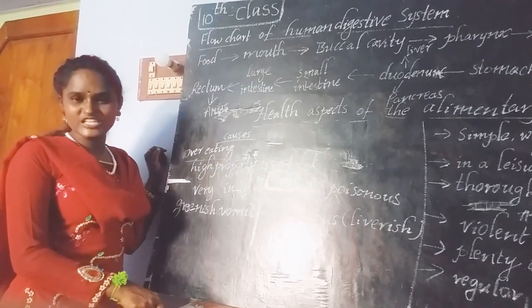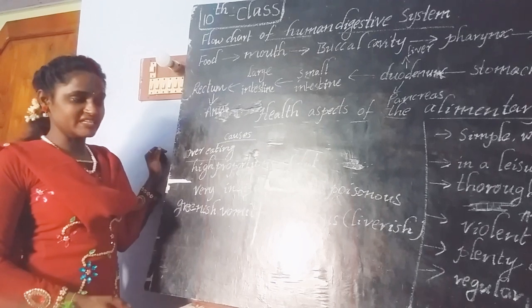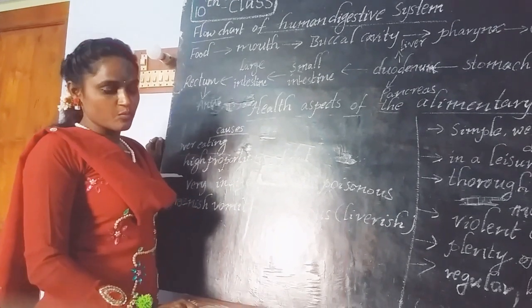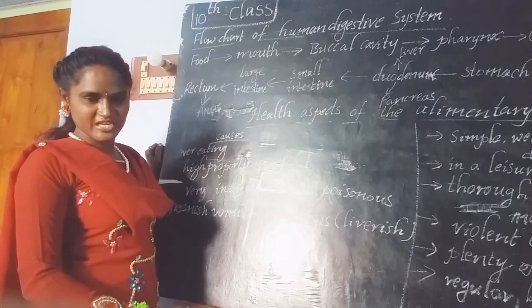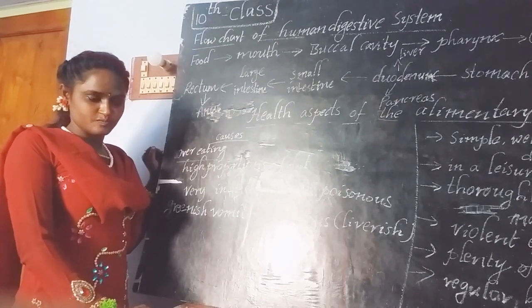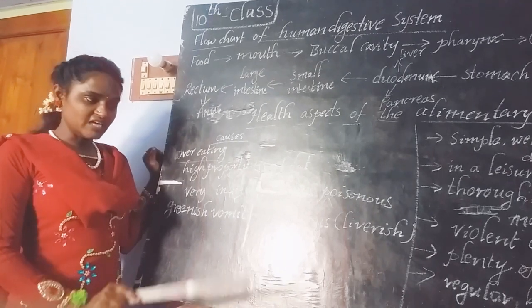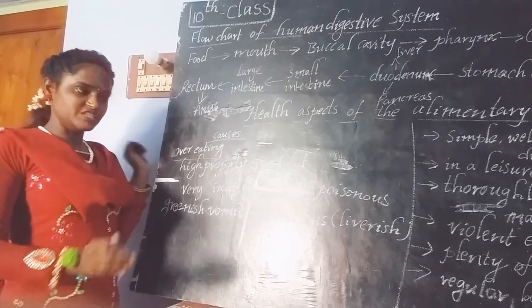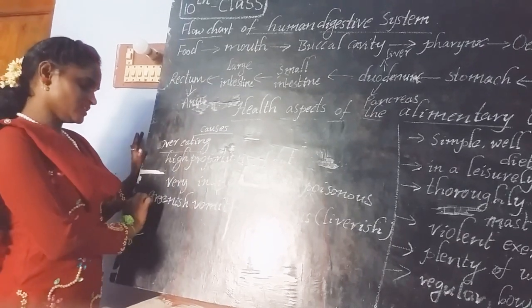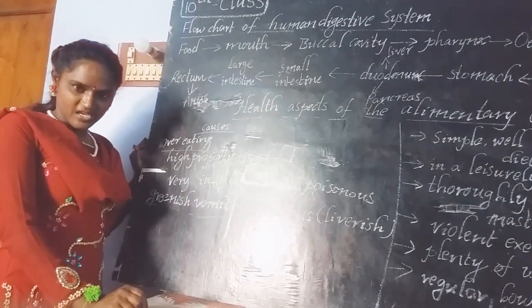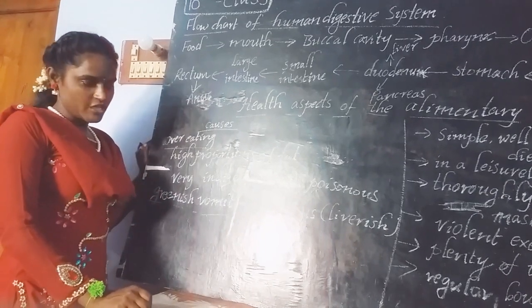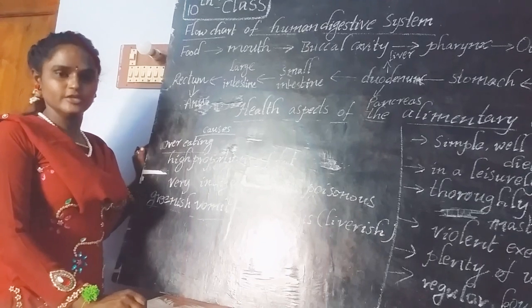Some people experience greenish vomiting, which is called bilus, also known as liverish. Most people under the age of 15 may get greenish vomiting because without limits they eat different varieties of food. At that time, our liver is unable to break down toxic materials into a less toxic form, and we get this greenish vomiting. To get rid of this, we have to take only healthy food.